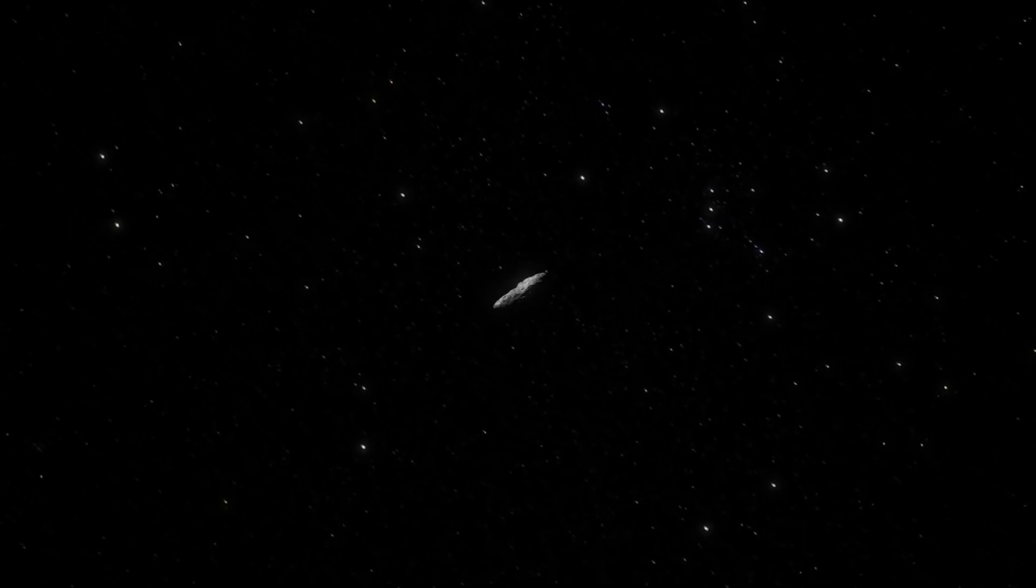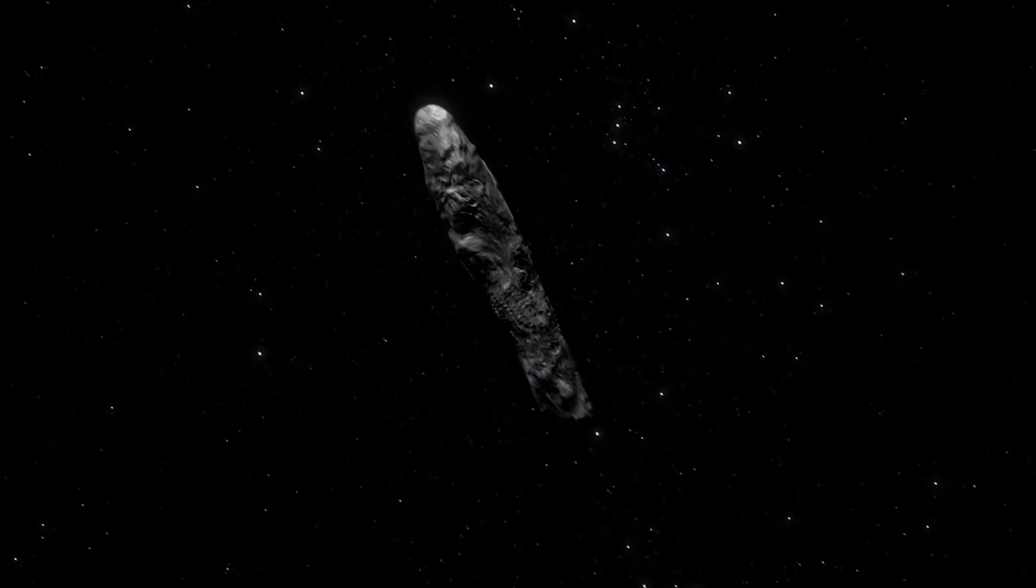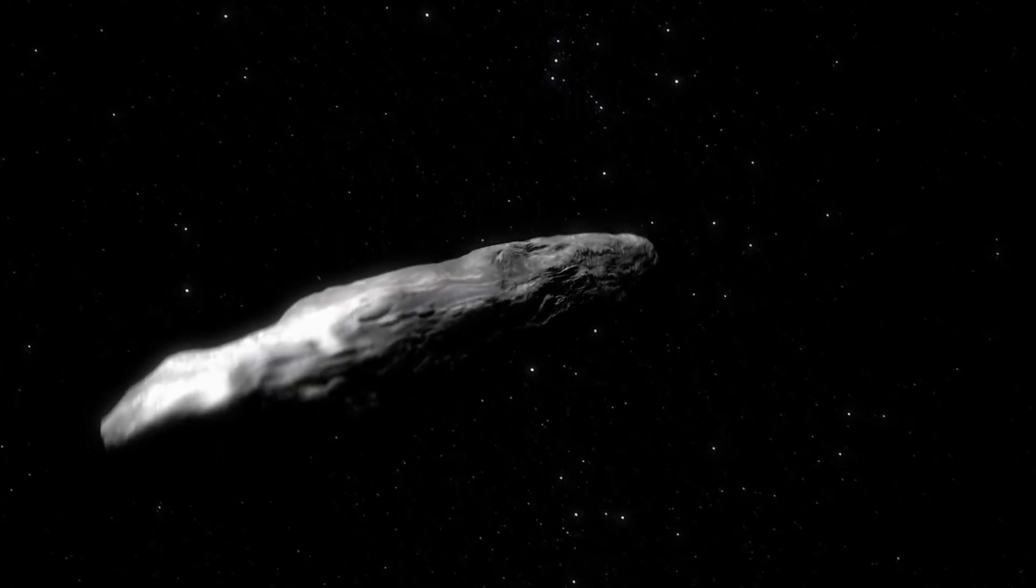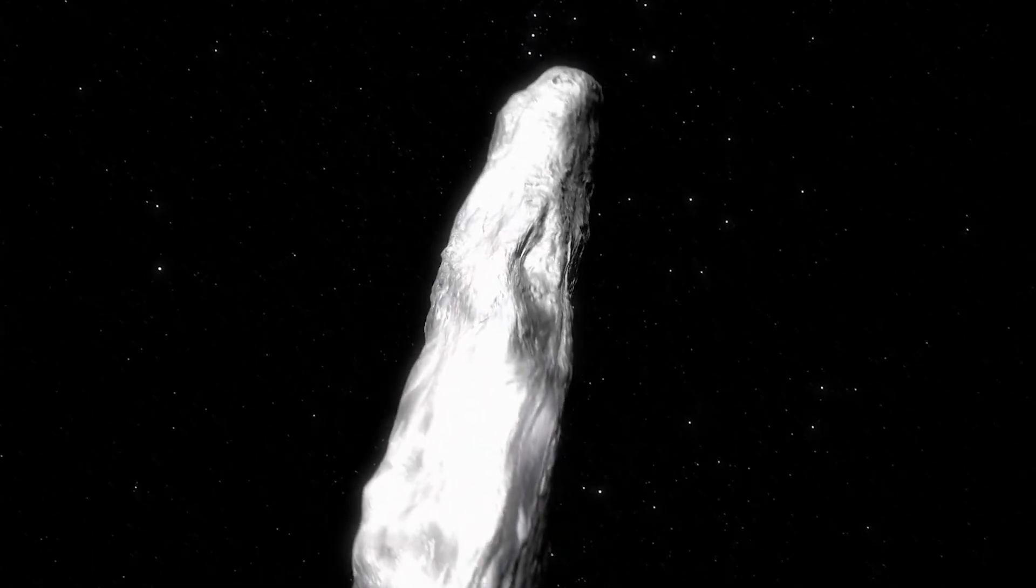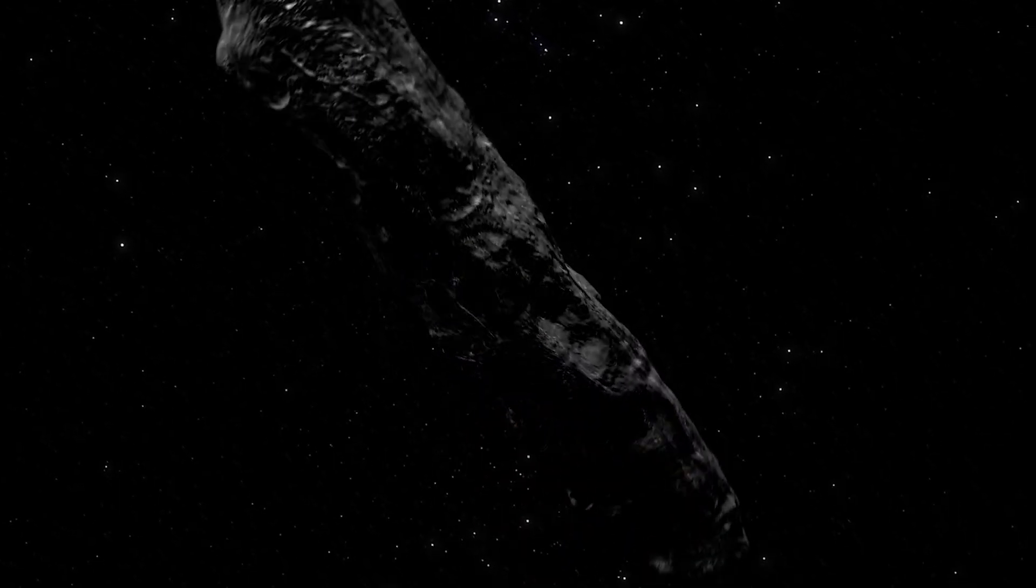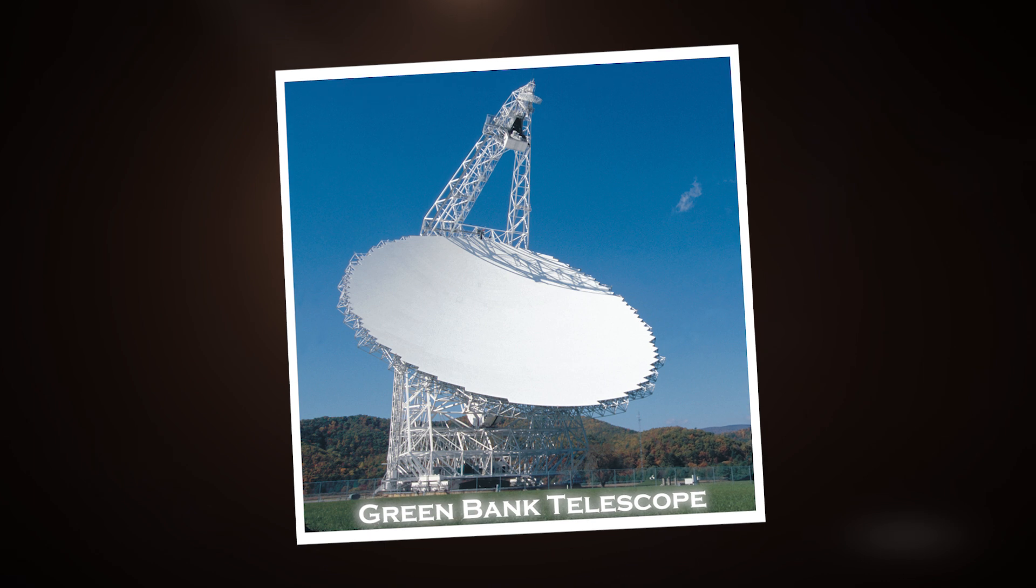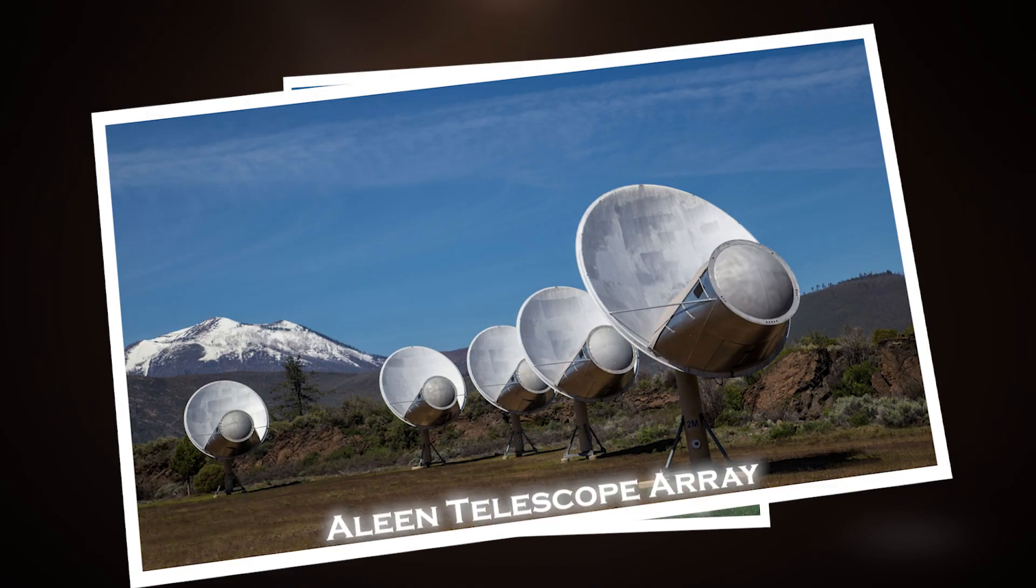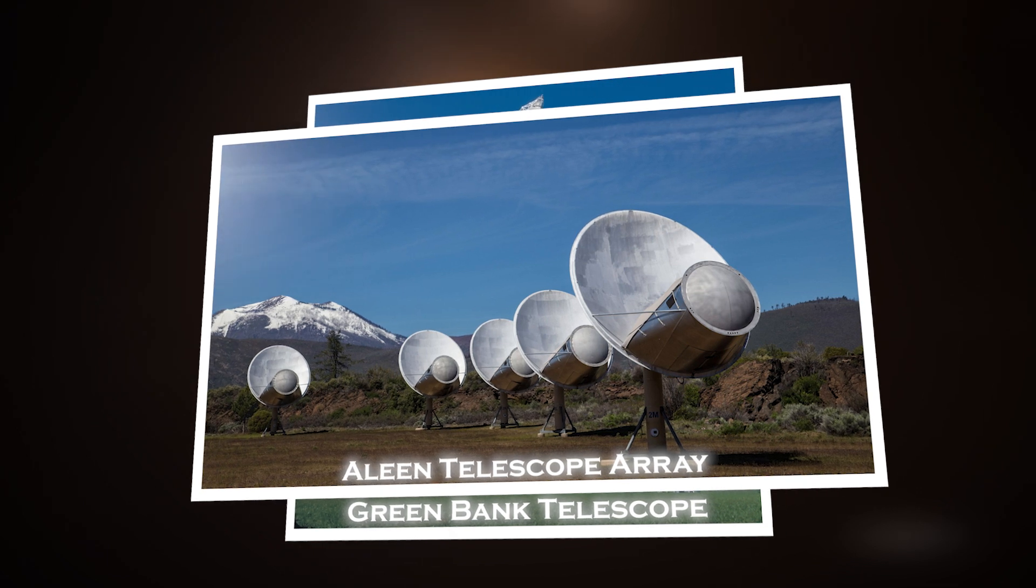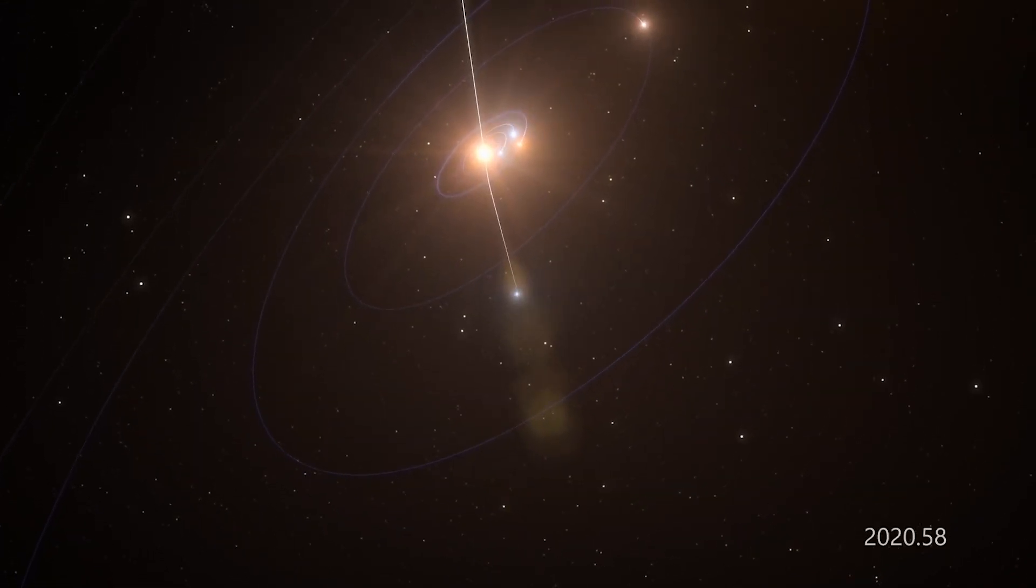Initially classified as a comet, the object was reclassified as an asteroid after observations failed to reveal a fuzzy coma. The discovery of Oumuamua was an anomaly, as our solar system does not produce debris like this. Using the Green Bank Telescope in West Virginia and the Allen Telescope in Northern California, astronomers have been listening for any potential signals, but the object has remained silent until now.